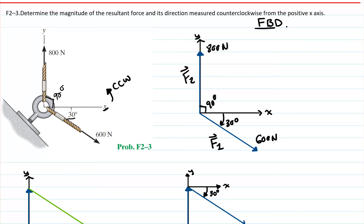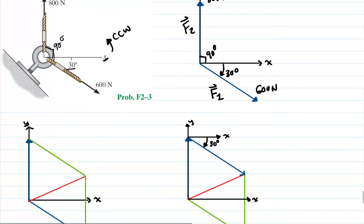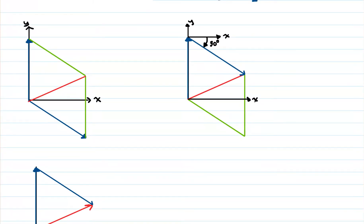In chapter 2, it focuses on implementing and using the parallelogram law, where you can use this law to illustrate the triangle head-to-tail addition of components. In these problems in chapter 2, we will focus on using the parallelogram method. In this free body diagram we will draw a parallelogram where we are going to have parallel sides.